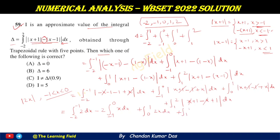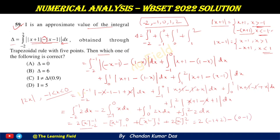Computing each term: ∫₋₂⁻¹ 2 dx = 2(−1 + 2) = 2. −2∫₋₁⁰ x dx = −2[x²/2]₋₁⁰ = −2(0 − ½) = 1. ∫₀¹ 2x dx = [x²]₀¹ = 1. ∫₁² 2 dx = 2(2 − 1) = 2. Total: 2 + 1 + 1 + 2 = 6. So δ = 6, which is option B — the correct answer.